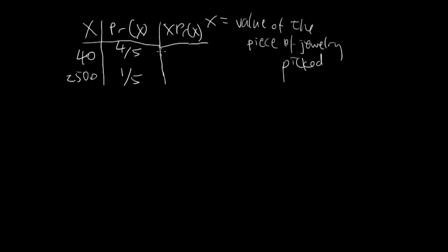Next, we take the product across. So here's 160 over 5, and here's 2500 over 5. Add up the products, and you will get 2620 over 5, and that is your final answer.